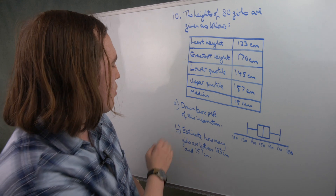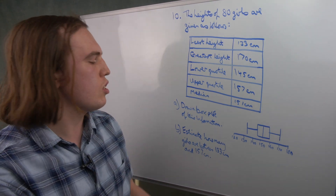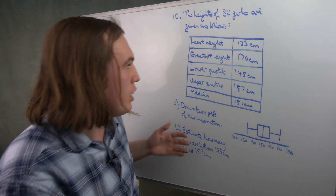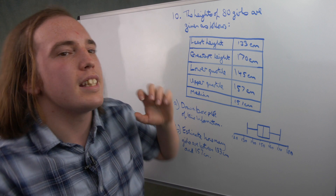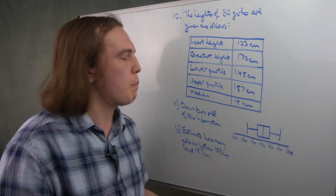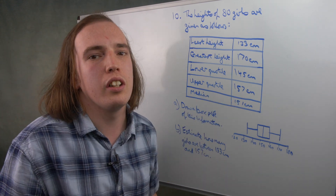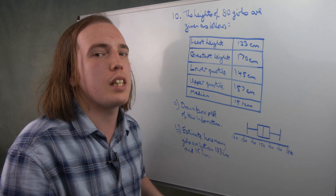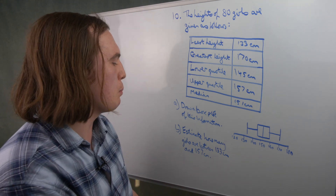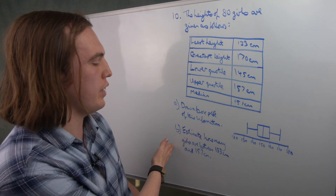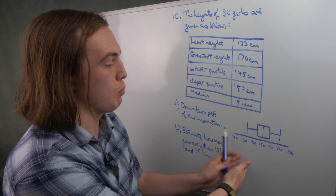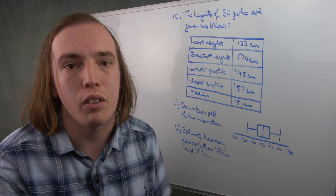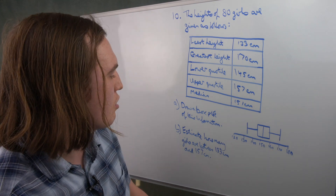Part B asks us to estimate how many girls are between 133 and 157. 133 is the least height — there is no one below that. 157 is the upper quartile, meaning 75% of people are below it. So how many people are between the lowest possible value and the value which 75% is beneath? That's 75% of 80, or three quarters of 80, which is 60.